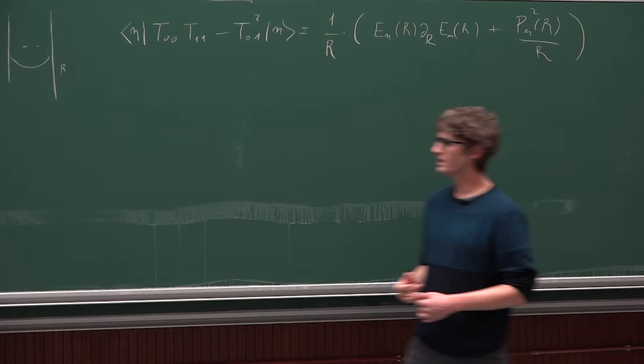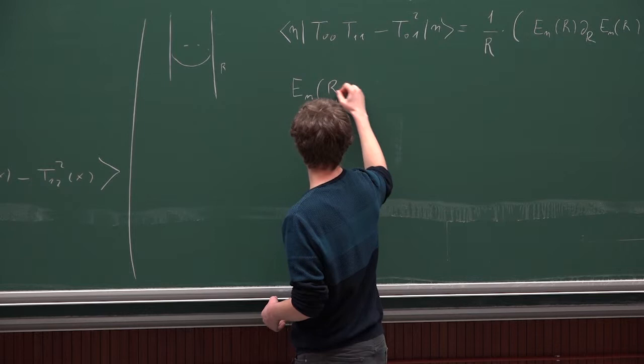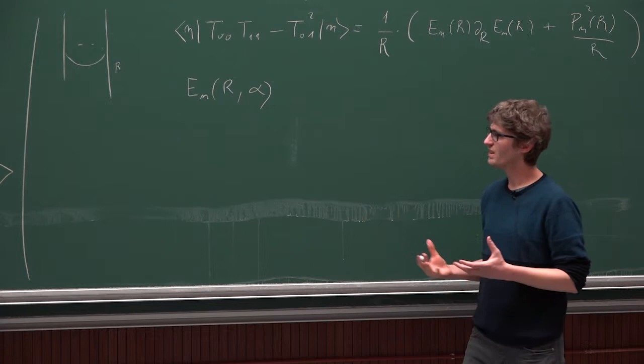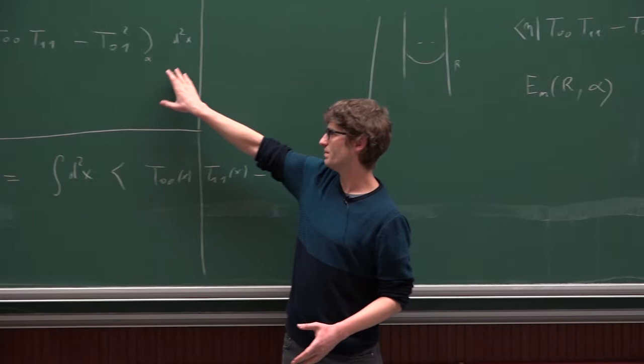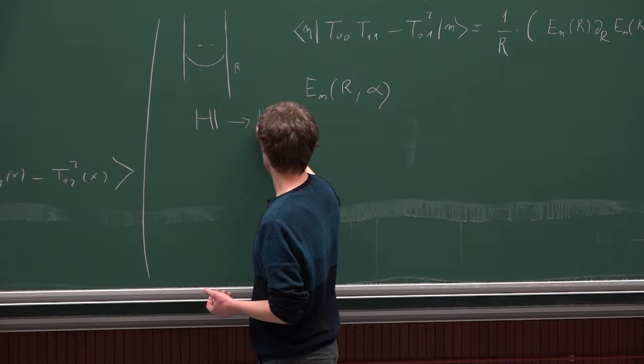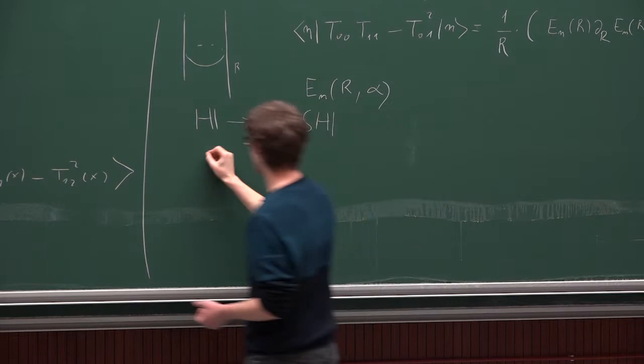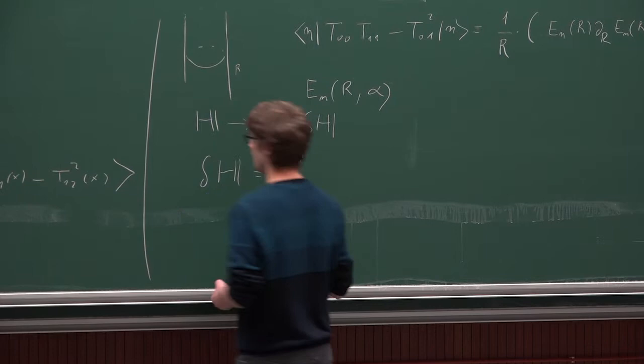So we will get some energy levels that depend on R and alpha. So essentially the conclusion that you can draw in the path integral formalism from this equation is that when you deform the theory with any operator, essentially your Hamiltonian is going to change by some amount that is just the integral of the deformation of the action on a spatial slice.